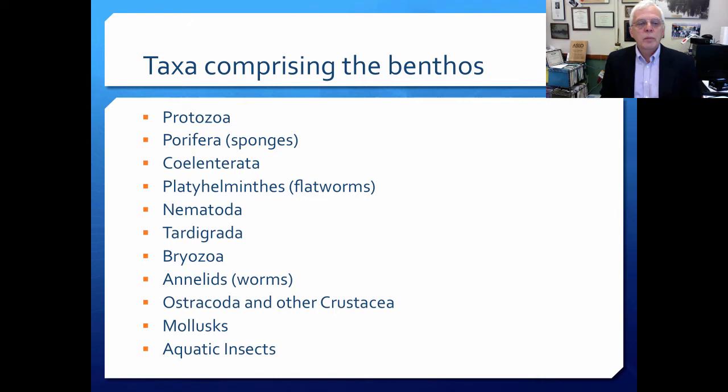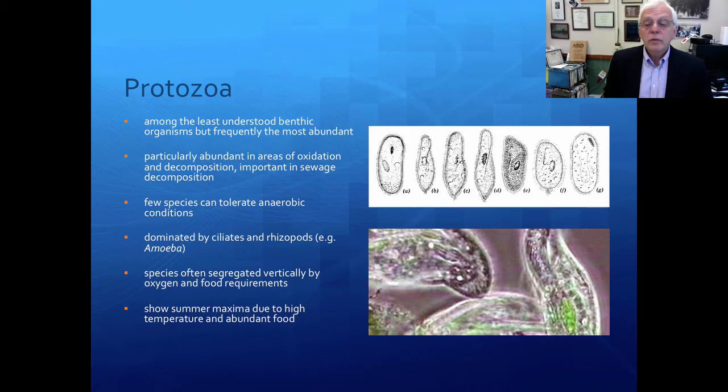There are lots of taxa comprising the benthos. In general, these include the protozoa, the porifera which are the sponges, the coelenterata, platyhelminthes or flatworms, the nematodes, tardigrades, bryozoa, annelids or various kinds of worms, ostracods and other crustaceans, the mollusks, and the aquatic insects.